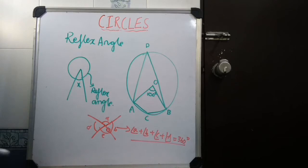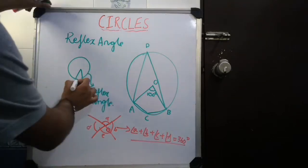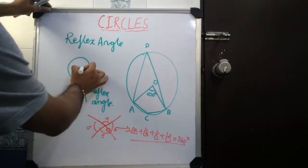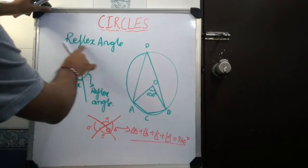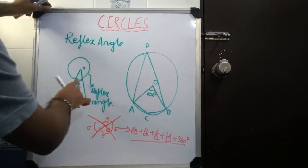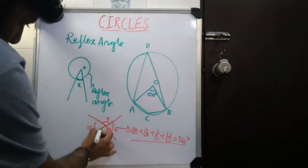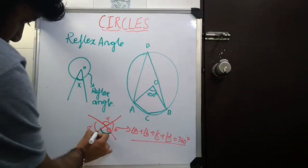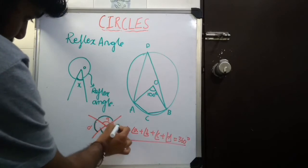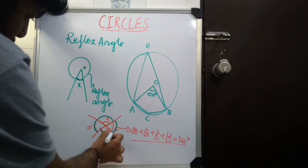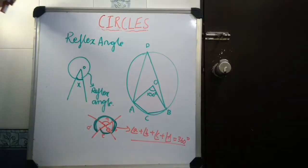Now, if I have an angle X here, the other angle which is present about the point is called as the reflex angle. So, if C is an angle, angle D plus angle A plus angle B will be the reflex angle of the angle C.